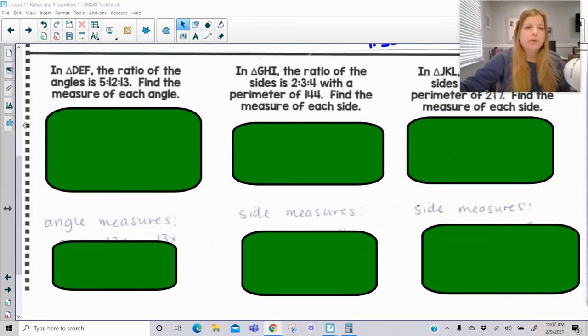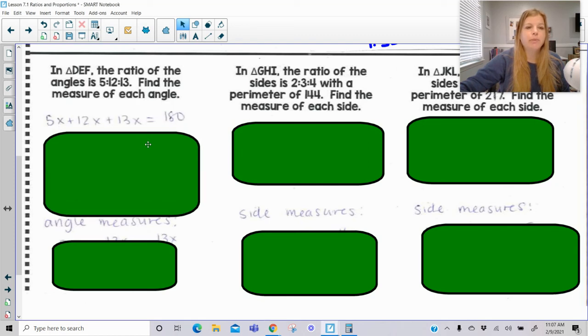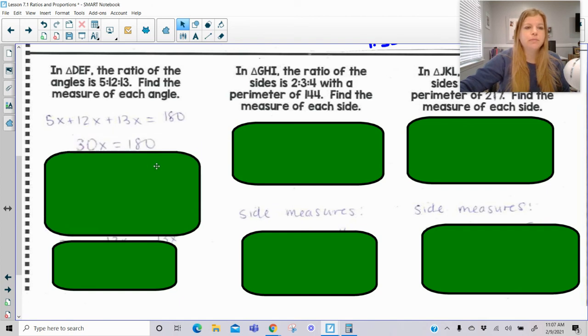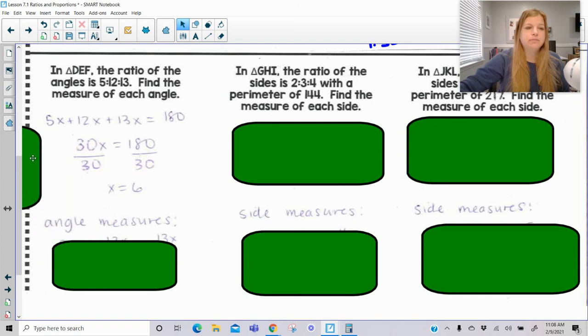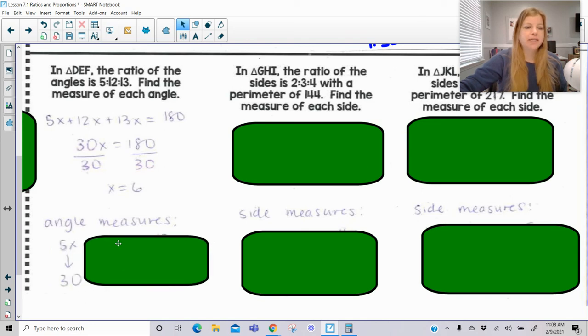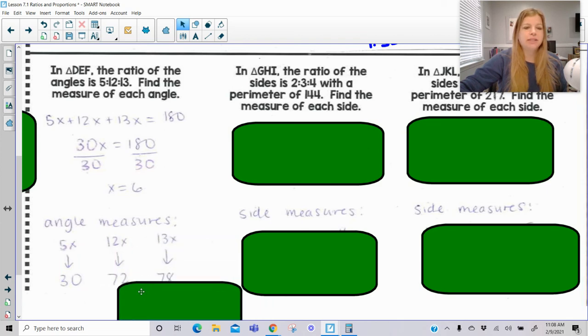Let's take a look at some of these problems. In triangle DEF, the ratio of the angles is 5 to 12 to 13. Find the measure of each angle. We would set it up the same way. So 5x plus 12x plus 13x equals 180, which gives us x equals 6. Then if I want to find my angle measures, I go back and plug in 6 for each one. 5 times 6 gives me 30, 12 times 6 gives me 72, and 13 times 6 gives me 78. And of course, these will add up to 180.